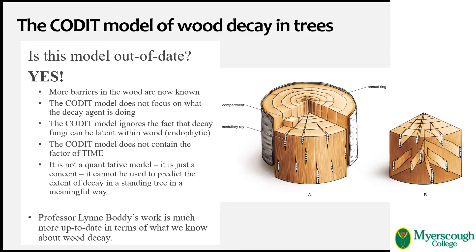More recent research shows how out of date the CODIT model is. For example, science has found other substantial barriers to wood decay, such as reaction woods and functioning sapwood with 100% moisture content, which help explain the pattern of decay development in trees. The CODIT model also has a focus solely on what the tree is doing — it has no focus on what the decay agent is capable of or its strategies for colonizing the wood of the affected tree, which further science has proven to be really quite sophisticated. Clearly, if you want to model decay, what the decay fungus is doing would be important.